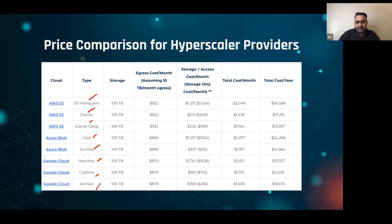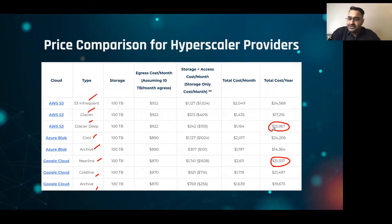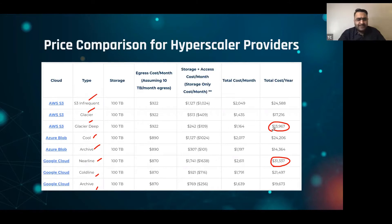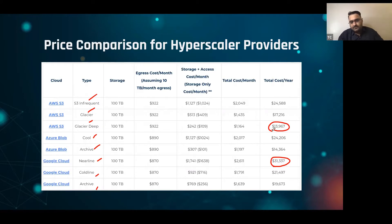What you'll notice is that the total cost per year ranges at the high end of about $31,000 for 100 terabytes, to the low end of roughly $14,000 for 100 terabytes. A lot of people would say that's still more expensive than keeping 100 terabytes on-prem, so we started to dissect this number a little bit.